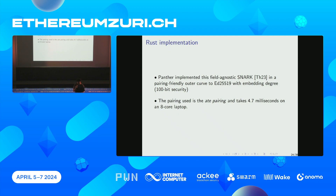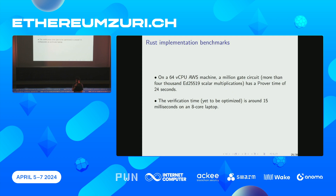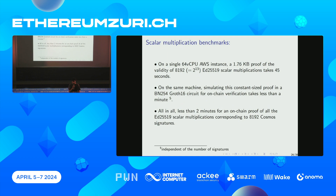We also have a Rust implementation on an AWS instance. On a 64-core AWS instance, the proof time was 24 seconds, and the verification time is 15 milliseconds on an 8-core laptop. On a single AWS instance, the 1.76 KB fast variant takes 45 seconds. In the same machine, the simulation for BN254 Groth16 takes less than a minute. In total, combining all of this, it takes sub-two minutes to do the whole thing.